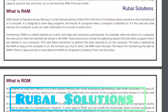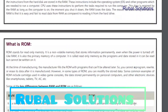ROM stands for Read Only Memory. It is non-volatile memory that stores information permanently even when the power is turned off. Like RAM, it is also primary memory of the computer. It is called Read Only Memory as the programs and data stored in it can be read but cannot be written on it. At the time of manufacturing, the manufacturer fills the ROM with programs that cannot be altered later. So you cannot reprogram, rewrite or erase its data after it is manufactured. However, in some types of ROM you can modify the stored data.